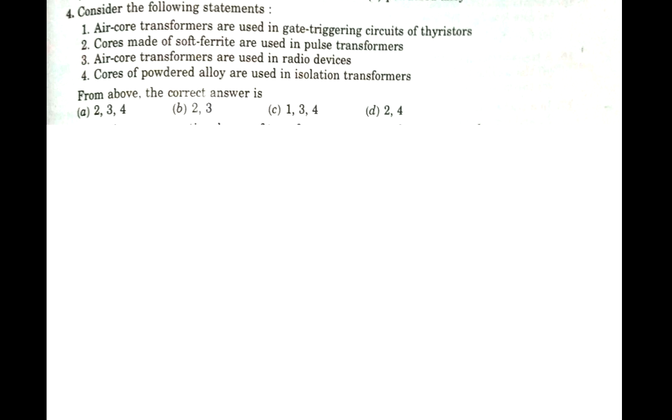The fourth question presents four statements. Statement 1: air core transformers are used in gate triggering circuits of thyristors. Statement 2: cores made of soft ferrite are used in pulse transformers. Statement 3: air core transformers are used in radio devices. Statement 4: cores of powdered alloy are used in isolation transformers. Which combination of correct statements is given in Options A, B, C, and D?